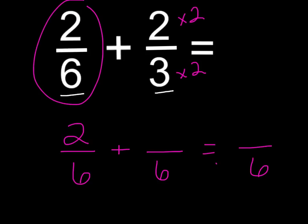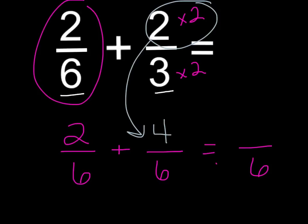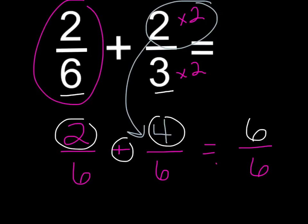And remember, we never ever ever add the bottom, so we just move 6 over as the denominator in our answer. Then we need to multiply the numerator: 2 times 2 equals 4. Then it's just a matter of adding — 2 plus 4 equals 6. We only ever ever add the top, so now we know that 2 plus 4 equals 6, and the answer to our fraction problem is 6 sixths. And as someone in this class can tell you, when you've got the same numerator and the same denominator, it is equal to one whole.